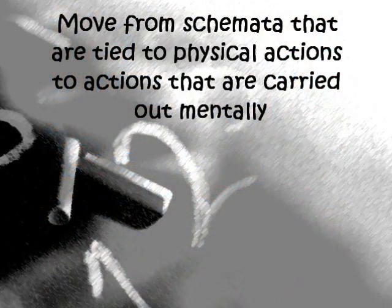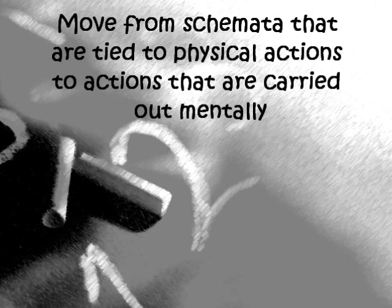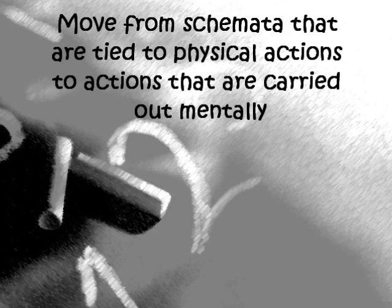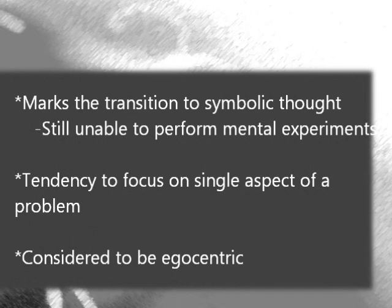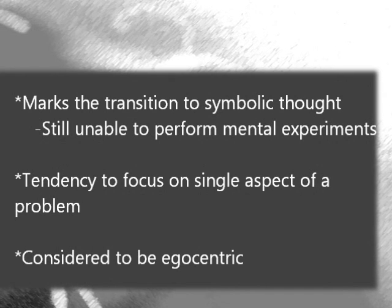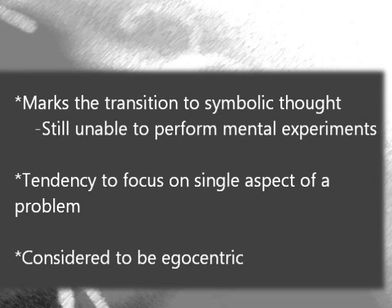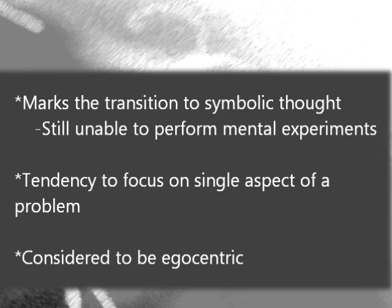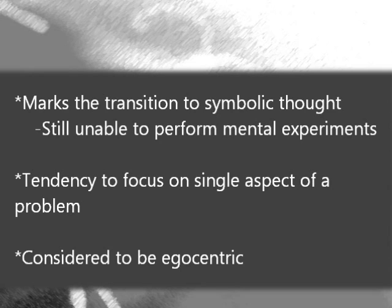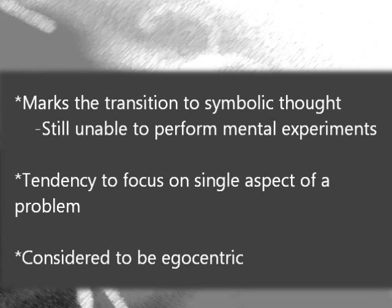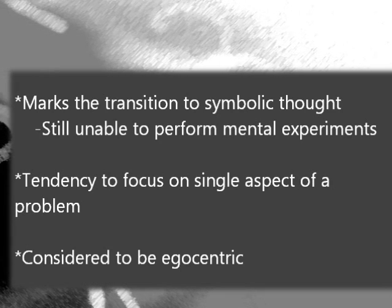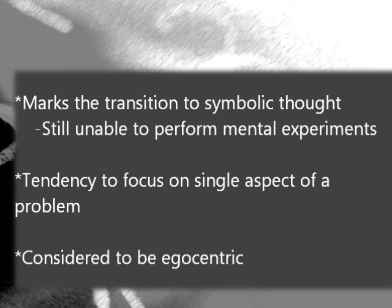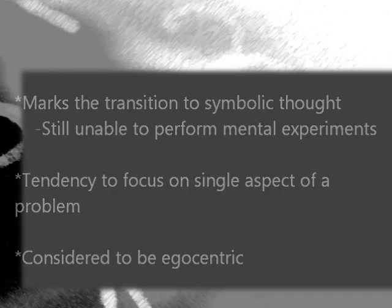During the preoperational stage, the child can move from schemata that are tied to physical actions to actions that are carried out mentally by thinking things through. This stage marks the transition to symbolic thought, although they are still unable to perform mental experiments. They can think something through, but they can't mentally reverse the process. They also have a tendency to focus on a single aspect of a problem, and are generally considered to be egocentric — they can't see something from another's perspective.